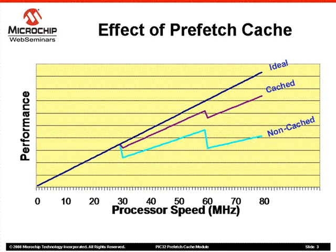An operation beyond 60 MHz would require two wait states. Because of these wait states, the effective flash throughput will be reduced. The non-cached line shows what happens when there is no Prefetch Cache Module available and flash memory is limited to 30 MHz. In this case, processor performance drops significantly as frequency is increased beyond the flash speed of 30 MHz. The cached line shows the performance when the Prefetch Cache Module is enabled, and the performance is significantly better than the non-cached scenario.